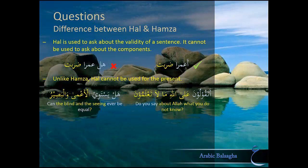Another difference is that هَلْ cannot be used in the present tense. For example, Allah says أَتَقُولُونَ عَلَى اللَّهِ مَا لَا تَعْلَمُونَ (Are you saying about Allah what you do not know?). Here the verb تَقُولُونَ is in the present, so Hamza has been used and هَلْ would not have been correct. But Allah also says قُلْ هَلْ يَسْتَوِي الْأَعْمَى وَالْبَصِيرُ (Say, can the blind and the one with vision ever be equal?), where the context is not present tense and so هَلْ can be used.